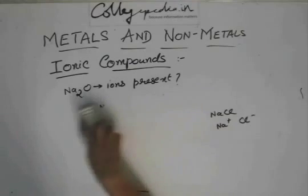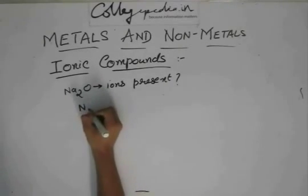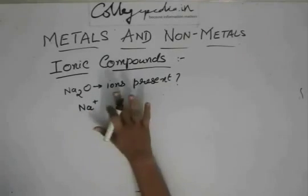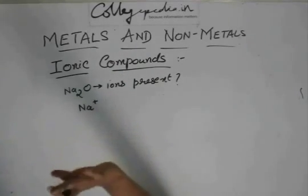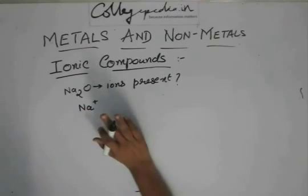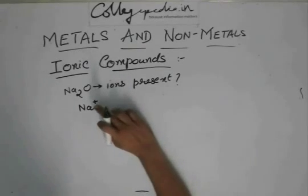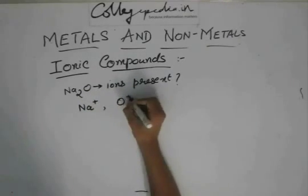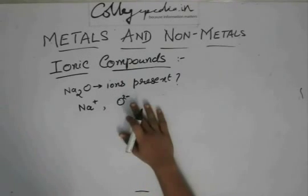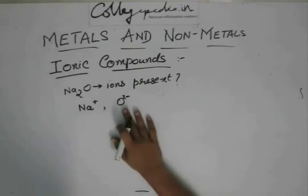So in Na₂O, write just Na⁺ because Na⁺ is the ion present. They are not asking how many are present in one molecule. Don't write Na₂⁺ because of this 2 — the 2 is because oxygen needs 2 ions of Na; the charge on Na is not 2. And for oxygen, don't write O⁻. The two ions present are Na⁺ (positively charged) and O²⁻ (negatively charged).